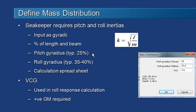For the pitch motions in the longitudinal direction, that value is typically about 25%. And for the transverse motions in the beam direction, that gy-radius is typically 35 to 40%. There is a calculation spreadsheet included with SeaKeeper. If you go to Program Files, MaxSurf and Utilities, you can find it there.